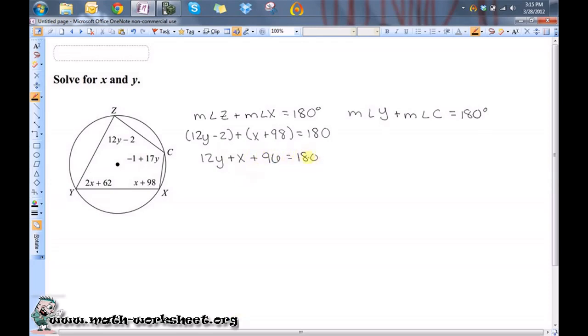Let's go ahead and subtract 96 from both sides so that this equation with two variables in it will be in standard form. So we have 12Y plus X equals 84.